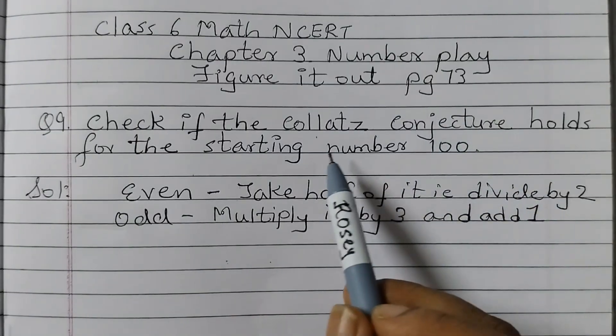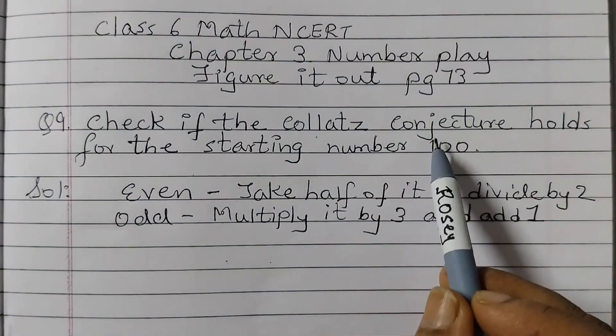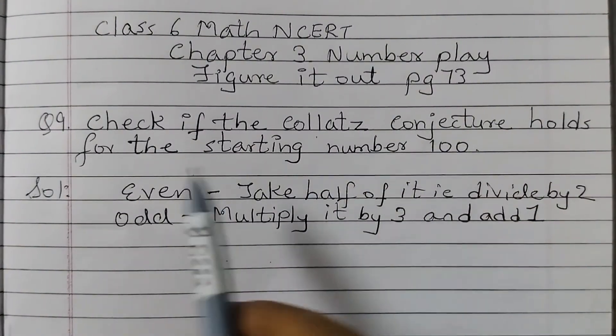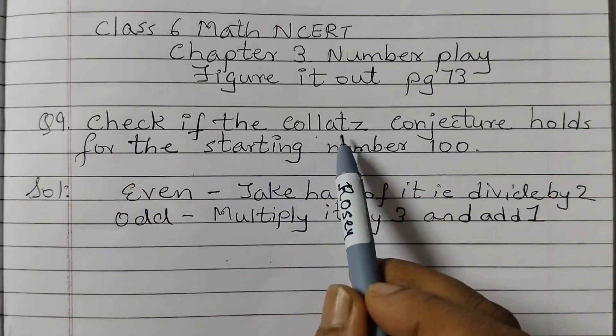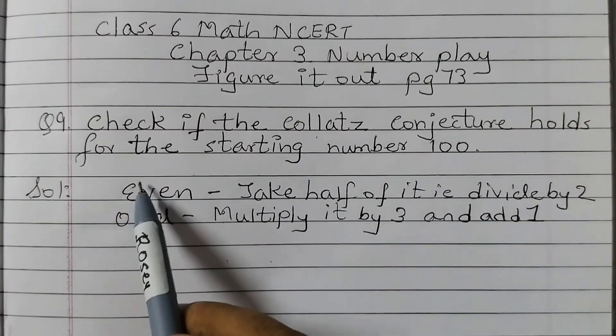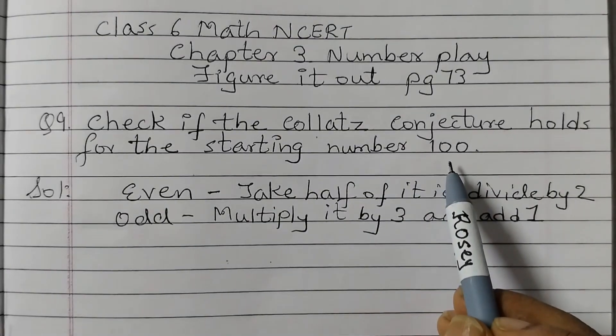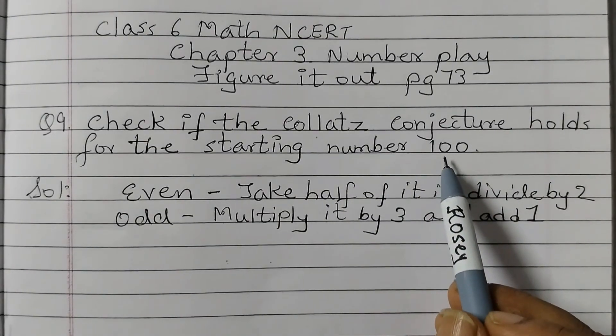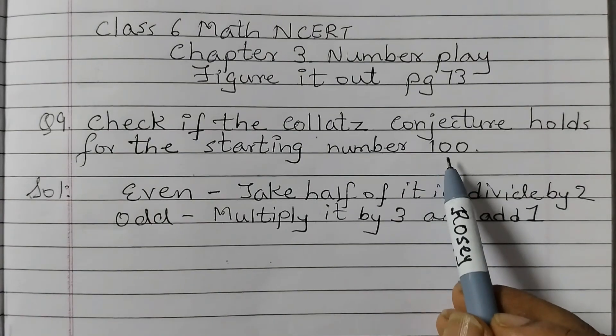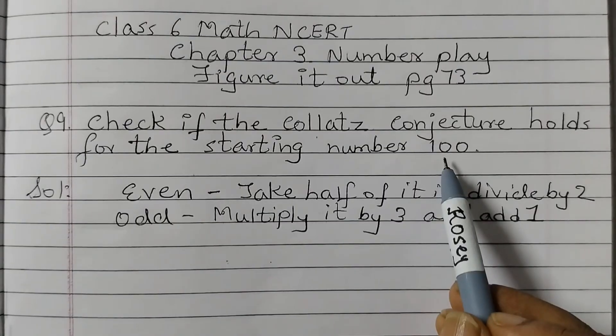This question is based on Collatz conjecture that you have learnt in 3.10. So the question is check if the Collatz conjecture holds for the starting number 100. Which means that does Collatz conjecture hold true for 100. That means if you start from 100, are we going to reach 1 by using the rules.